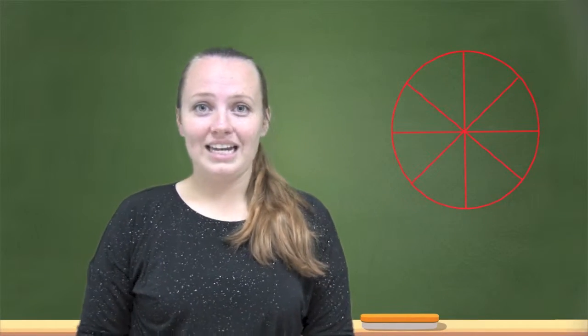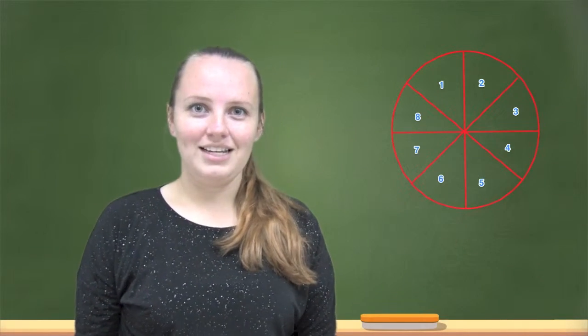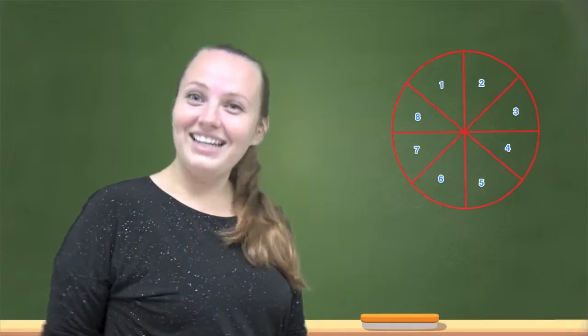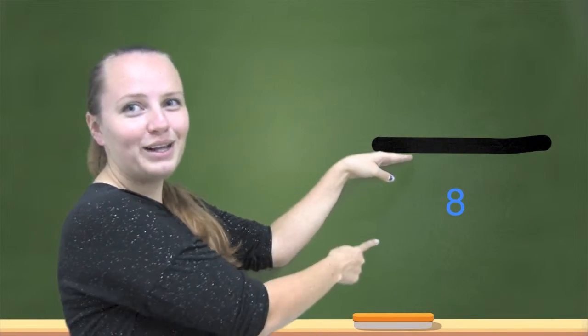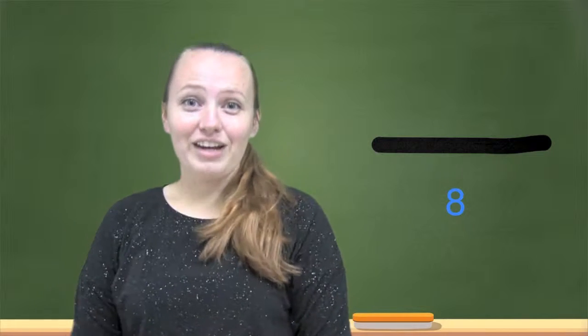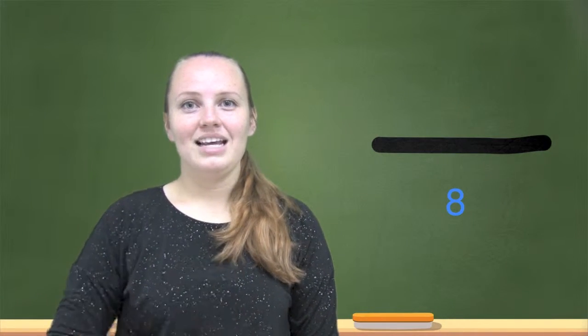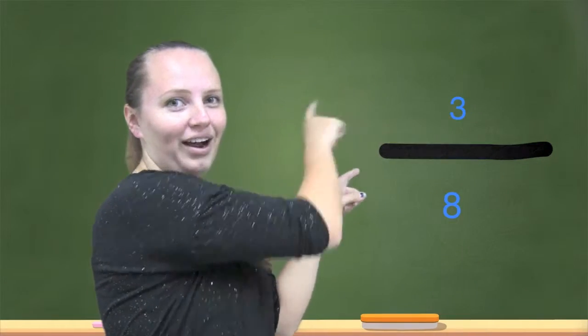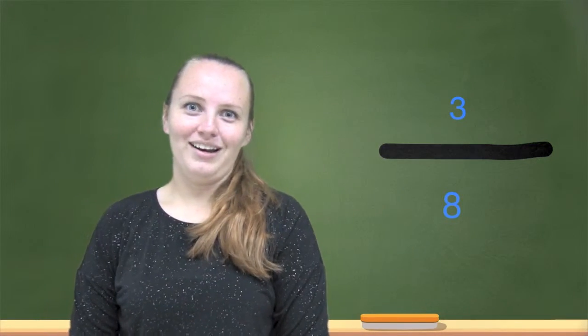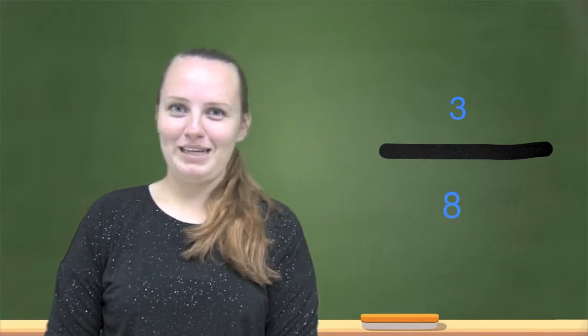So our first step is to count how many equal parts there are. There are eight equal parts of this pizza, so that is our denominator. Our eight goes below the bar. Three was the slices of pizza that I ate, so that's how many pieces I counted out. That number goes above the bar, and that is our numerator. So I ate three-eighths of my pizza.